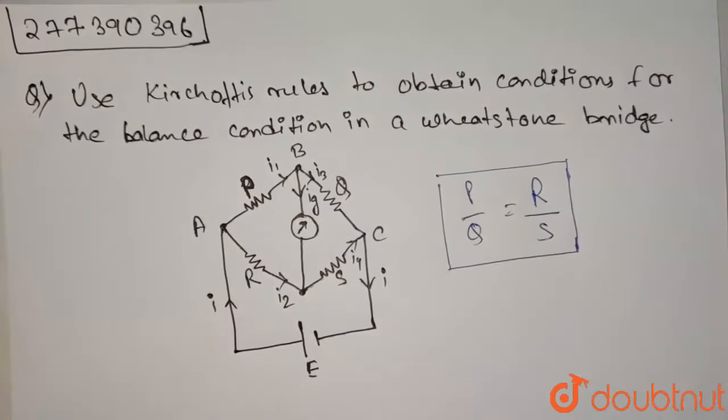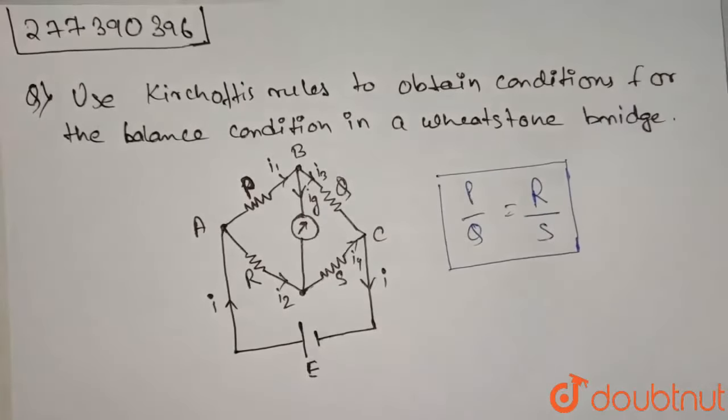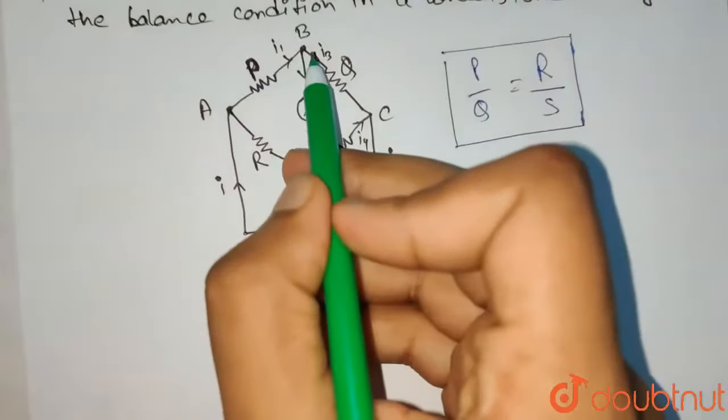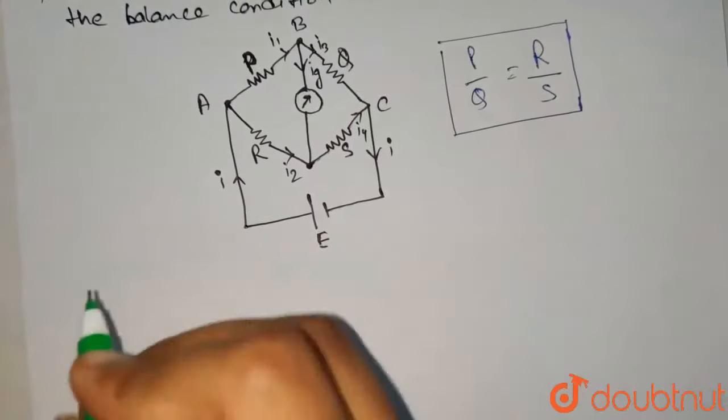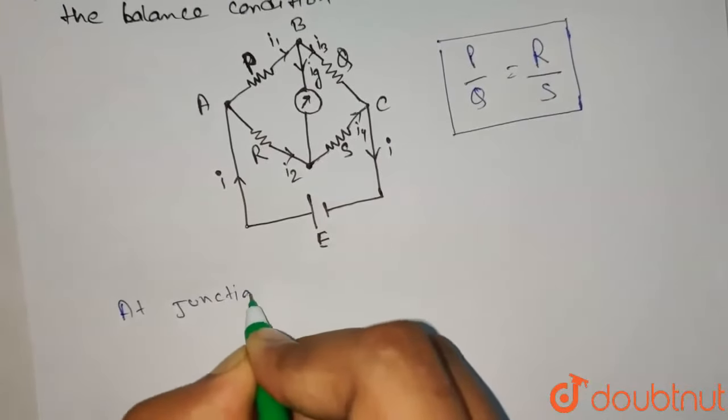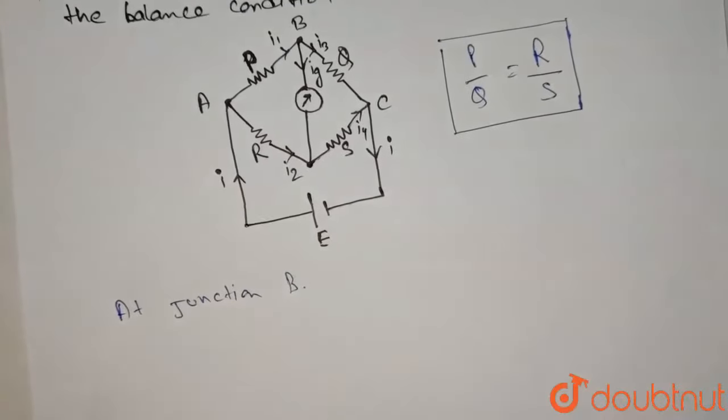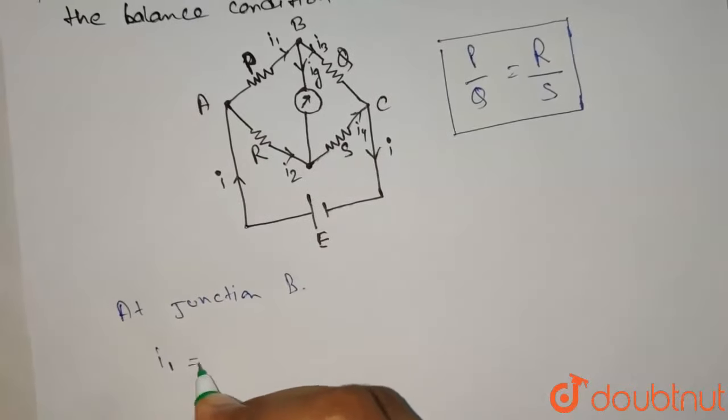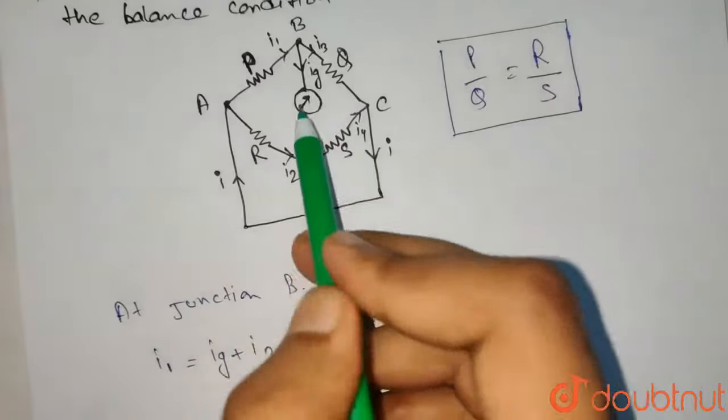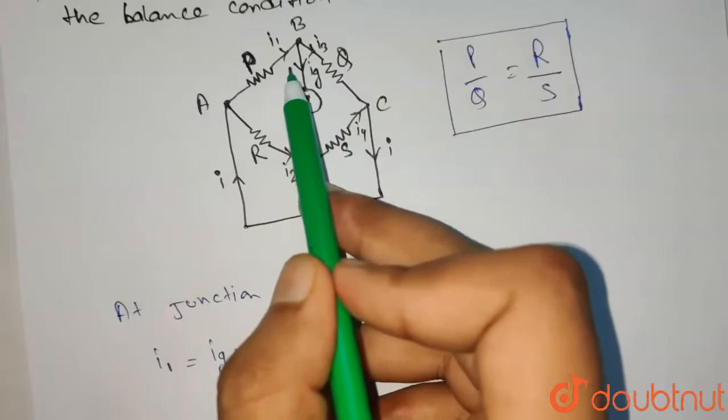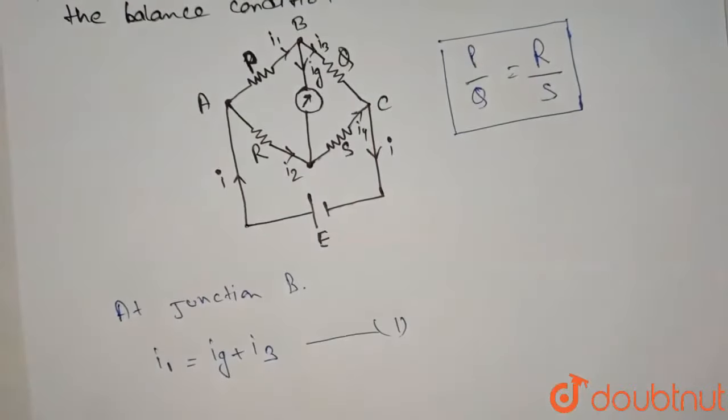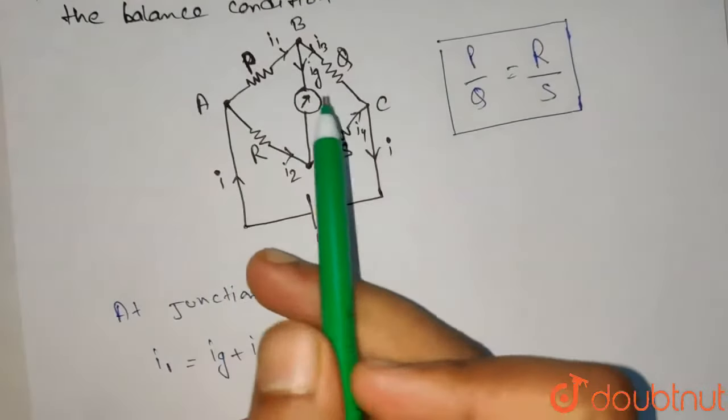And we have to prove this by Kirchhoff's law. So let's first use Kirchhoff's current law at junction B. What is Kirchhoff's current law? The current entering and the current outgoing from a particular node is equal. So I1 equals IG plus I3. This is equation one. Because IG is the galvanometer current and I3 and I1 are the currents respectively from AB and BC.